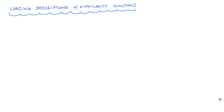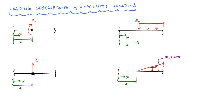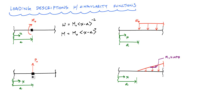The next question is: how do I describe the external loads applied to my beam using singularity functions? I'll give you a rundown on how all these are done — you can find these in almost any mechanics of materials textbook. For a concentrated moment at location A, the loading function is w equals M₀ times x minus a to the minus two, and as part of a moment function it's M₀ times x minus a to the zero power. For a concentrated force at location A, the loading function is P₀ times x minus a to the minus one, and as part of a moment function it's the magnitude of that force times x minus a to the first power.